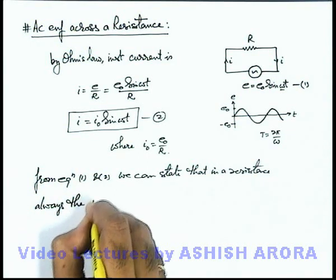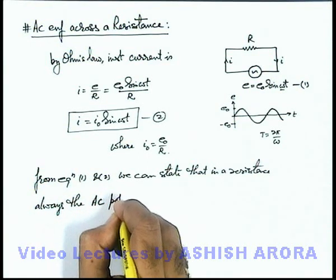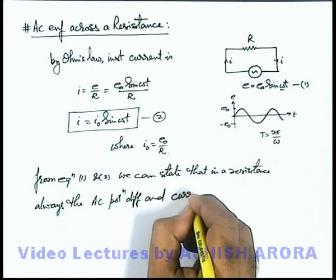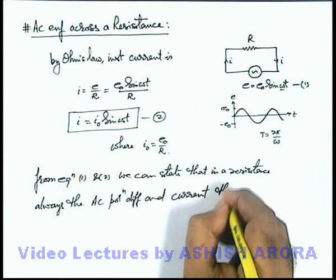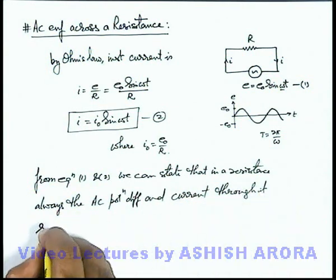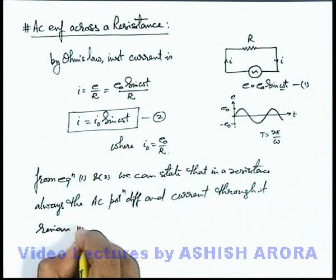the AC potential difference across a resistance and current passing through it remains in same phase.